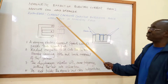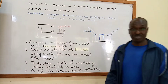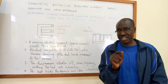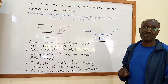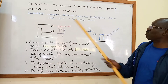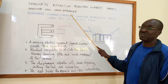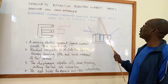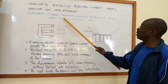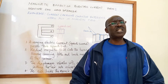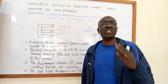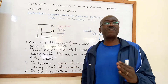The knowledge we require is: a current-carrying conductor, when it is placed in a magnetic field, will experience a force when current flows in it. That's why we say a current flowing in a conductor experiences a force — but only when that conductor is in a magnetic field. I can only talk of magnetic field if I have a magnet.